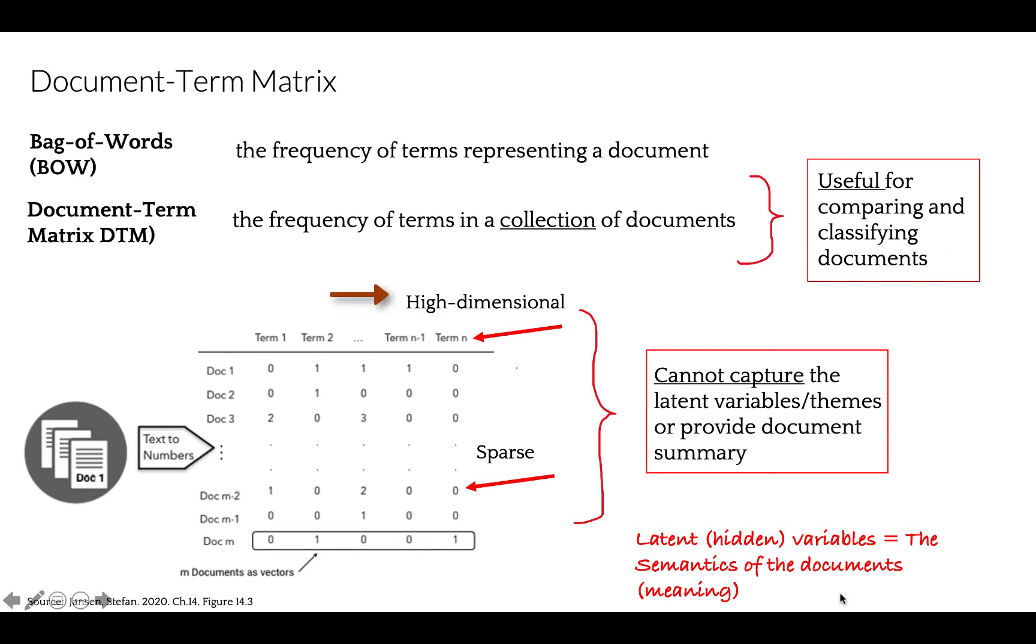However, as you know, it is usually both very high-dimensional and sparse. It contains many zero entries, because most documents only contain a small fraction of the overall vocabulary, and it cannot capture the latent or underlying structure or even summarize document content.